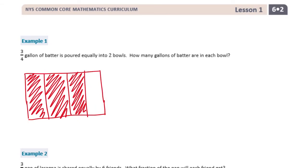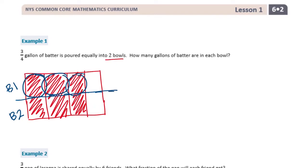It is poured equally into two bowls, so if we split this equally into two bowls, I'll partition it into two parts — bowl 1 here and bowl 2 here. Notice when we divided this into two equal pieces, it split from 4ths into 8 pieces. So in bowl 1, for example, we have 1, 2, 3 out of a total of 8ths.